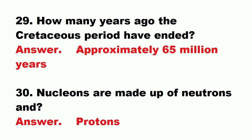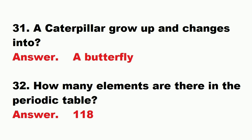Question: nucleons are made of neutrons and what? Answer: protons. Question: a caterpillar grows up and changes into? Answer: a butterfly. Question: how many elements are there in the periodic table? Answer: 118.